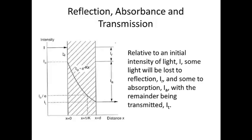In general, if we have an initial intensity of light entering into a material, we're going to have an initial loss of light, I sub r, due to reflection of the light. In addition, as the light passes from one surface of the material to the other, there's going to be absorption. That absorption is equal to I naught, the amount of non-reflected light intensity, times the exponent of negative kx, where k is a material constant and x is the distance passing through the material, or the thickness. The remaining light, I sub t, is then transmitted out the backside of the material.